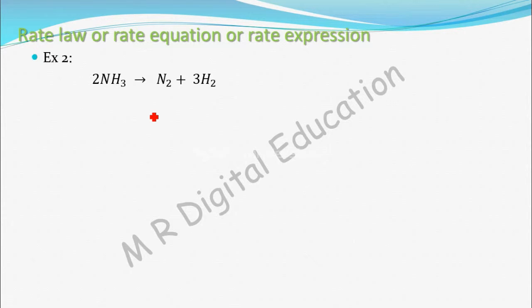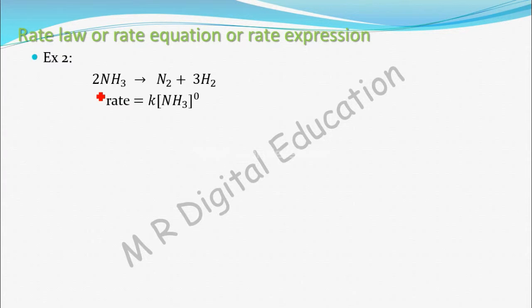Now consider the decomposition of ammonia: 2NH₃ → N₂ + 3H₂. This is the balanced equation. For this reaction, we can write the rate law as: rate = K[NH₃]⁰. This is an experimentally determined equation — you cannot write it by just looking at the reaction. The rate is given in terms of the concentration of the reactant NH₃, raised to power 0. In this case, the raised power is 0, but the stoichiometric coefficient is 2. So here, the stoichiometric coefficient and the raised power are not the same.